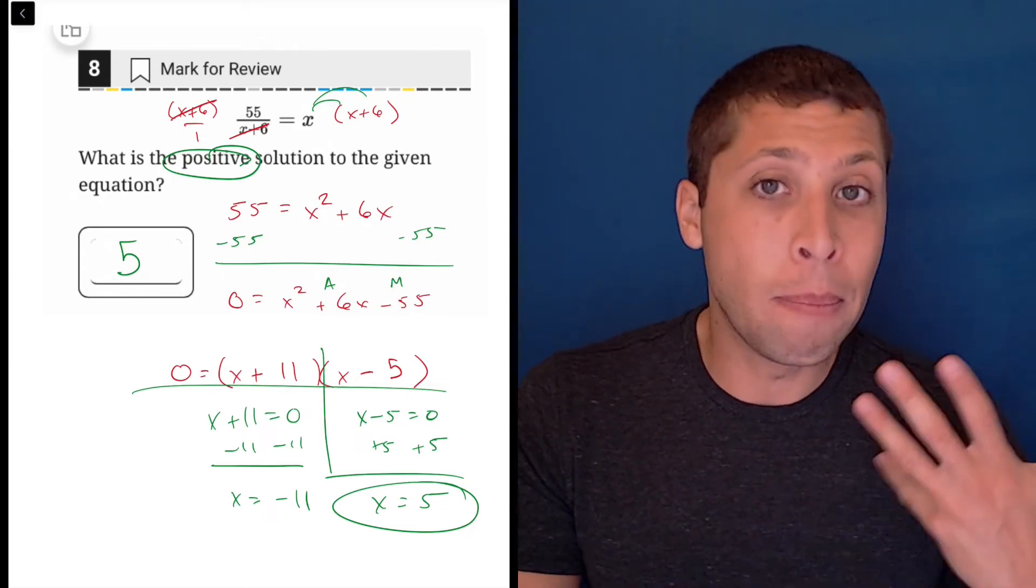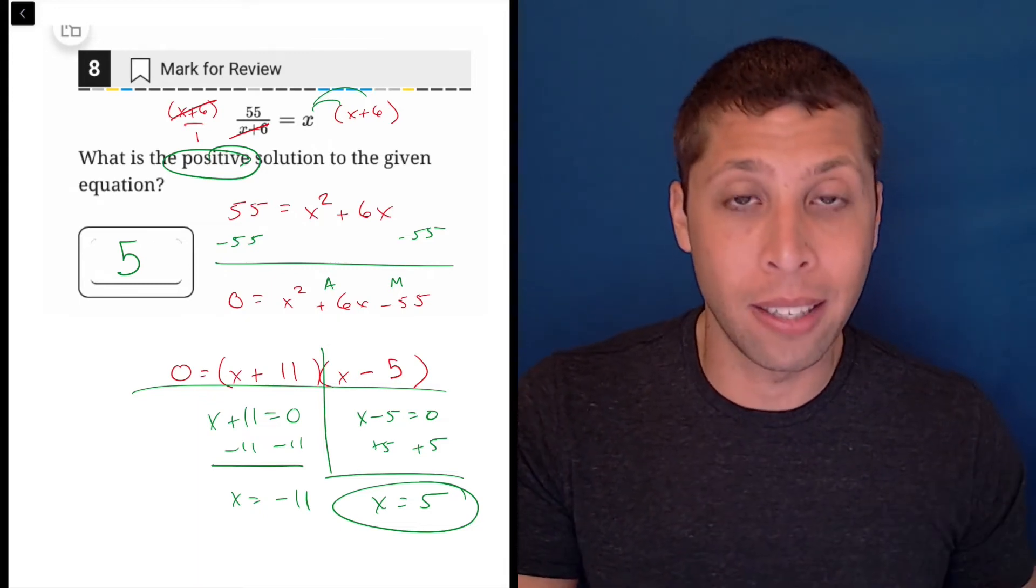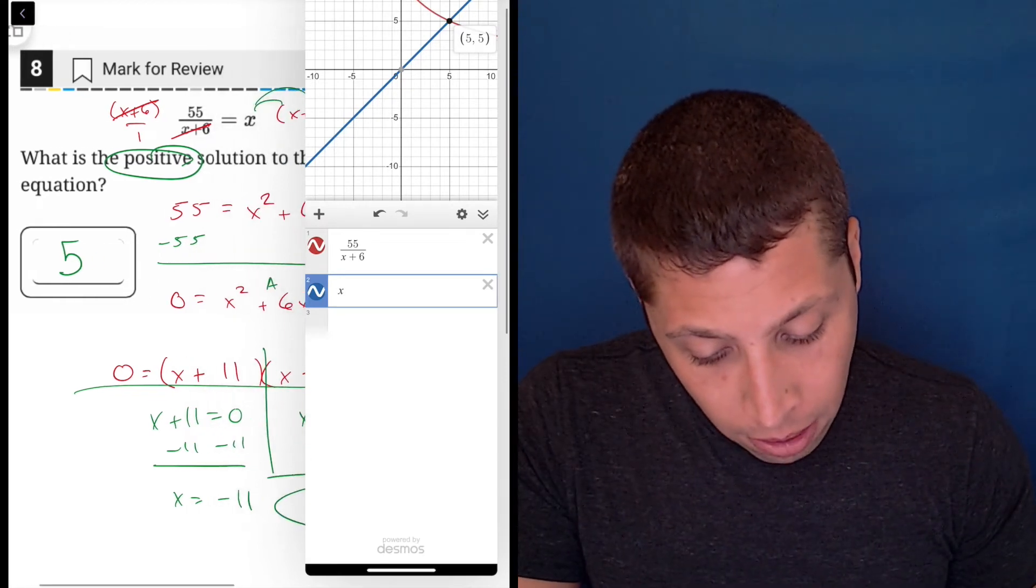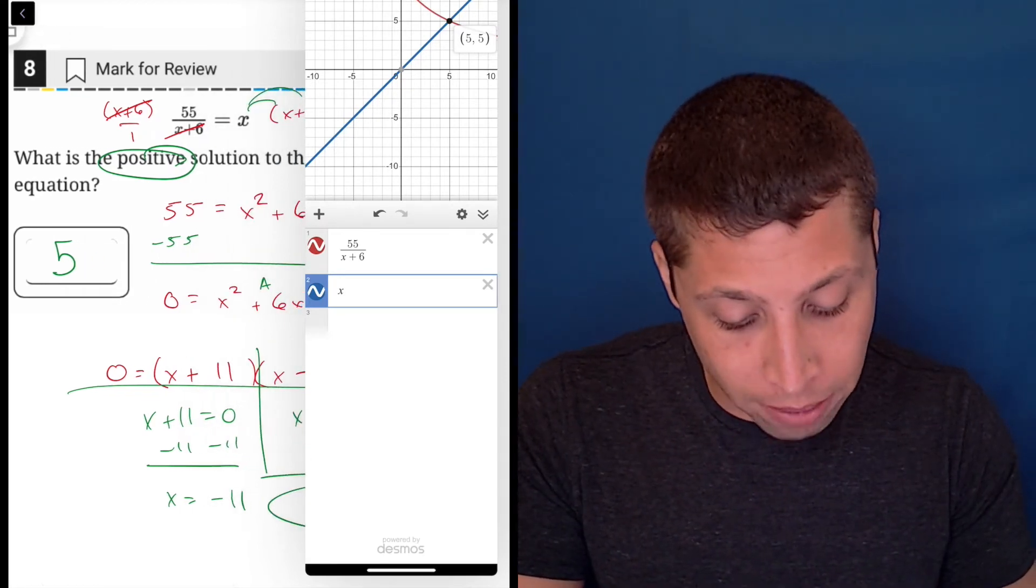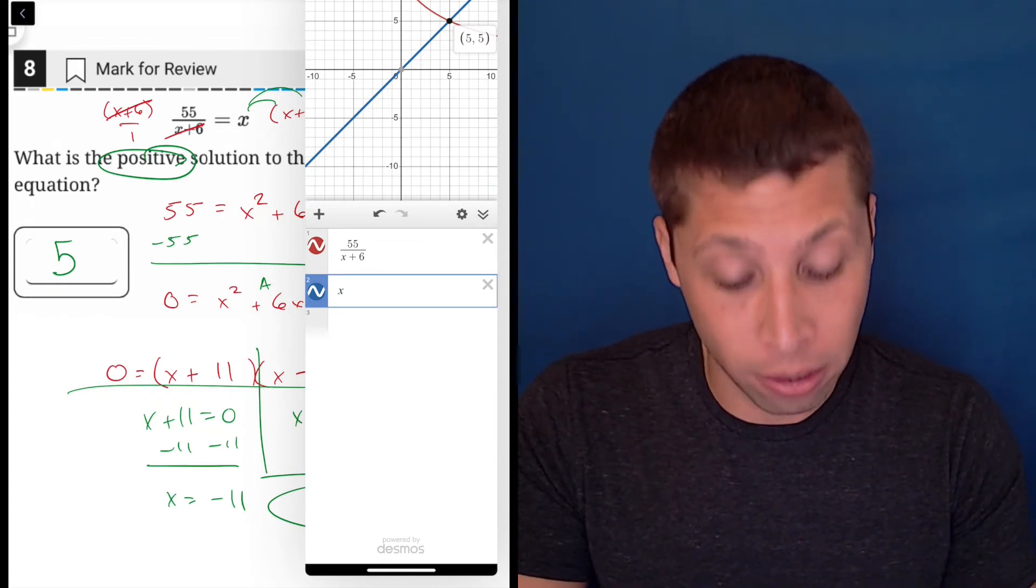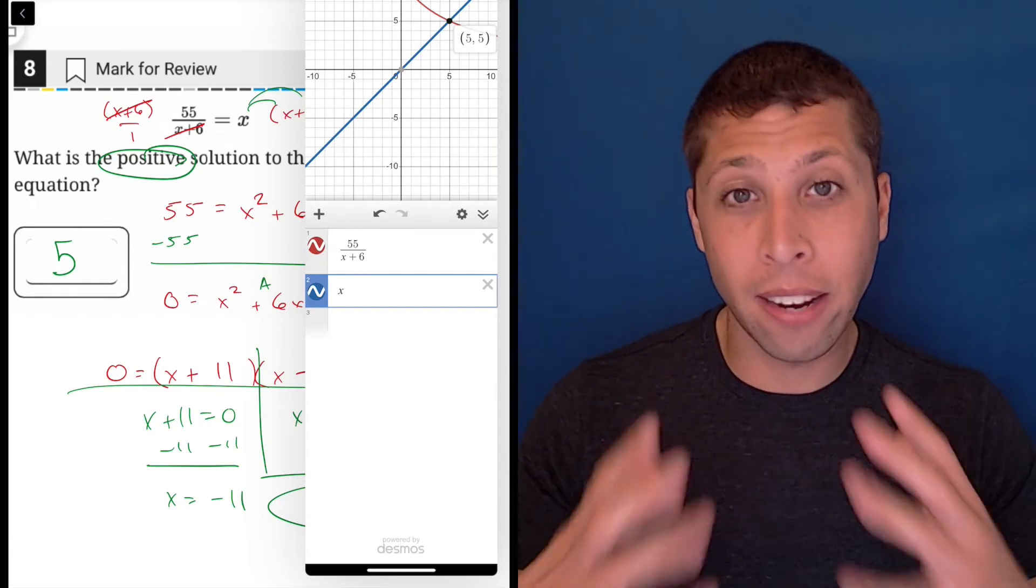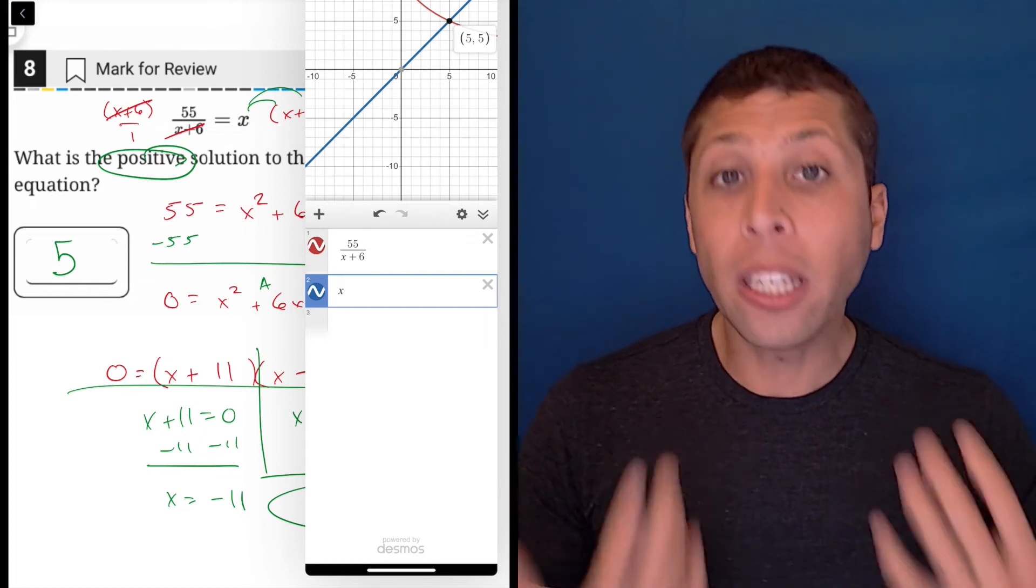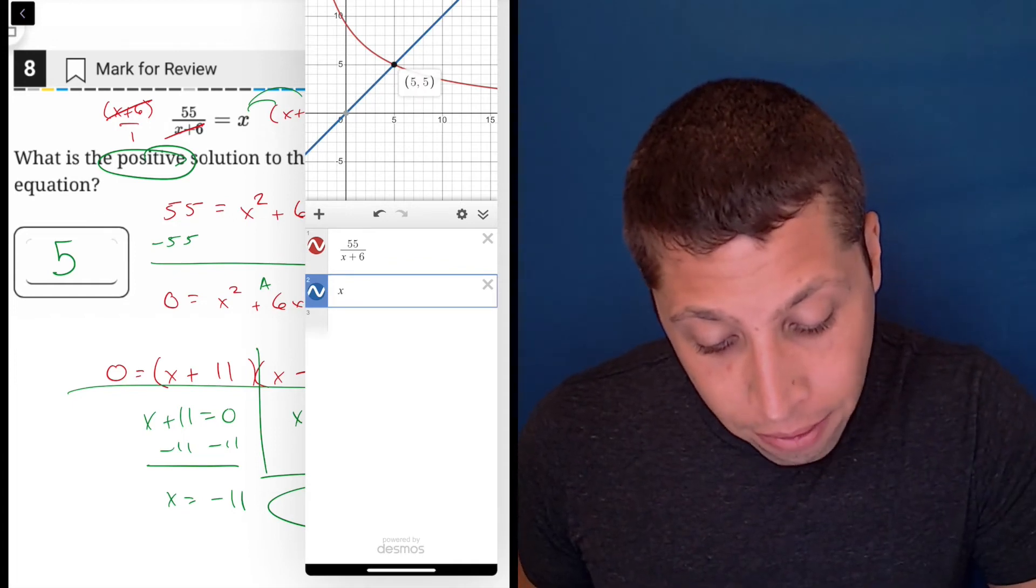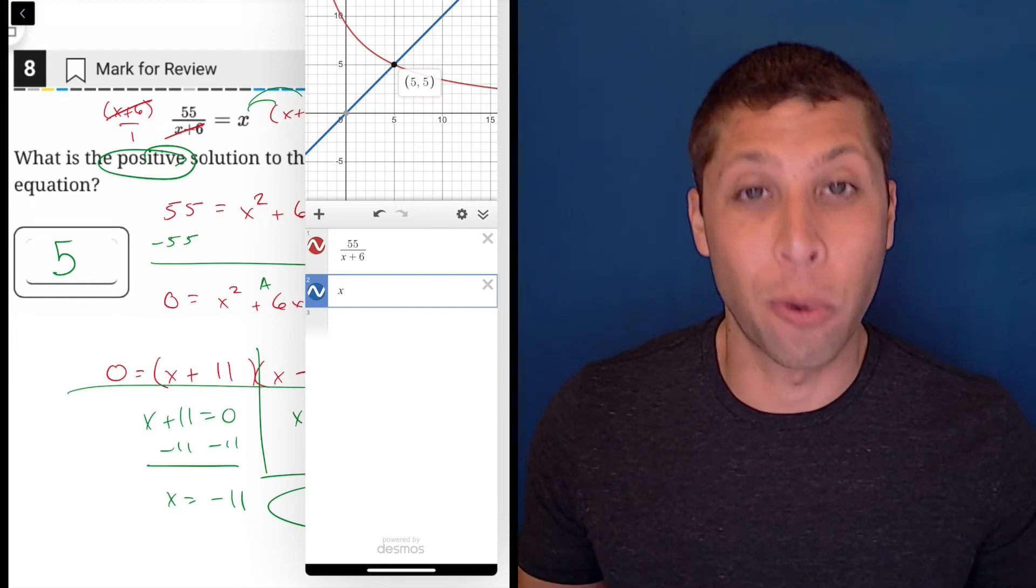Well, luckily we have a built in graphing calculator for every single math question on the new SAT. So I kind of set this up already here for you. Notice what I put into my two red and blues here, right? I put 55 over x plus six, that was the left side of the equation, and I have x as the right side. And so basically what I'm doing is I'm pretending instead of this being one equation, it's two, and I'm looking at where the two intersect. And sure enough, they intersect right there at the point five, five. And so there's my answer because that's what my x coordinate would be.